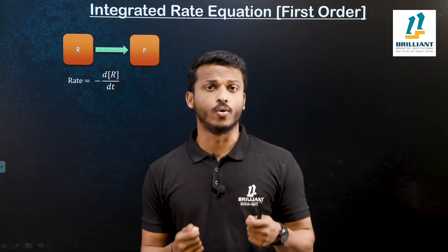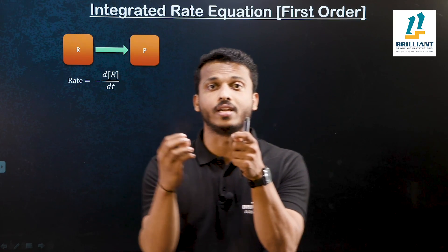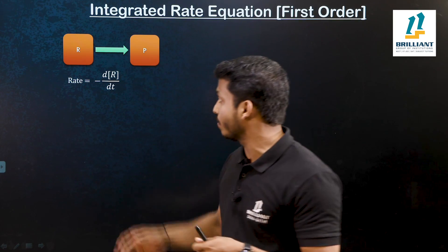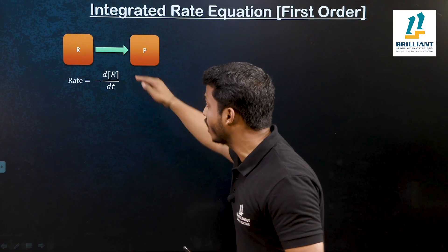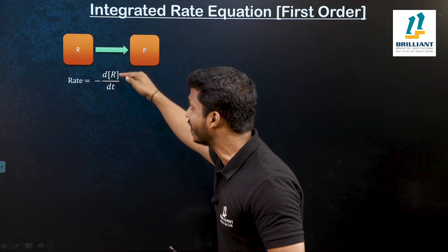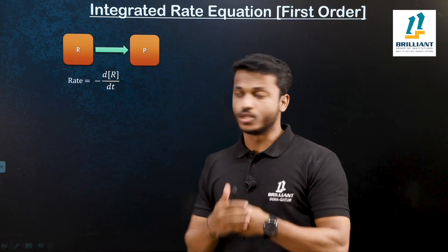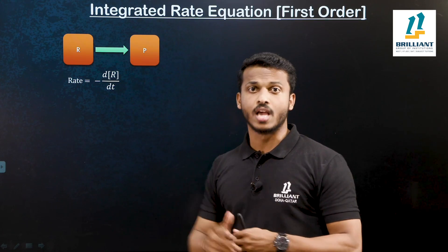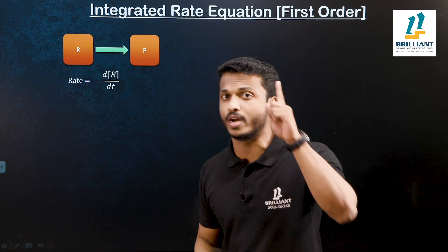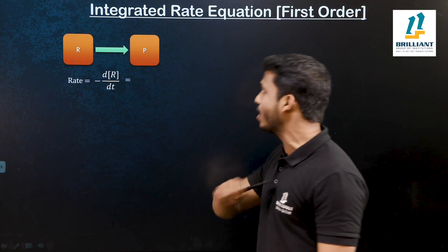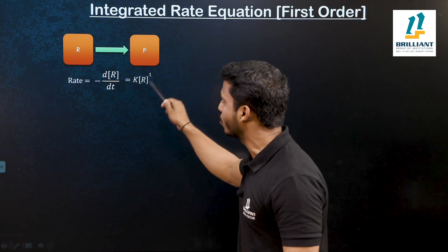Why minus? During a chemical reaction, reactant concentrations are decreasing. That sign is indicated by minus. So minus dR by dt is the change in concentration of reactant with respect to time. The rate of the reaction is: minus dR by dt is equal to k — the rate constant — into R to the power 1.